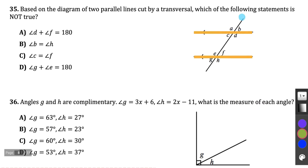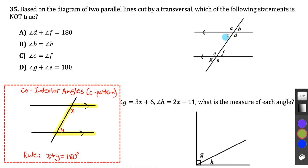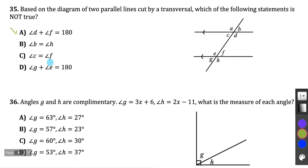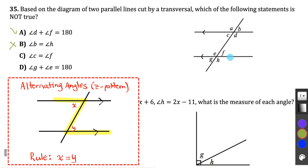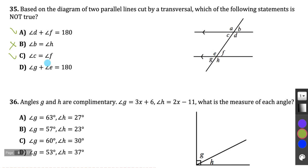Question 35: Two parallel lines cut by a transversal — which statement is not true? Angle D and F equal 180 — they're co-interior angles forming a C pattern, so yes that's true. B and H are equal — I know D and H are equal and D and B are not equal, so B and H are not equal to each other. C and F are equal — they form a Z pattern, alternating angles are equal, true. G and E equal 180 — they form a straight line, supplementary, true. So B is the answer that is not true.